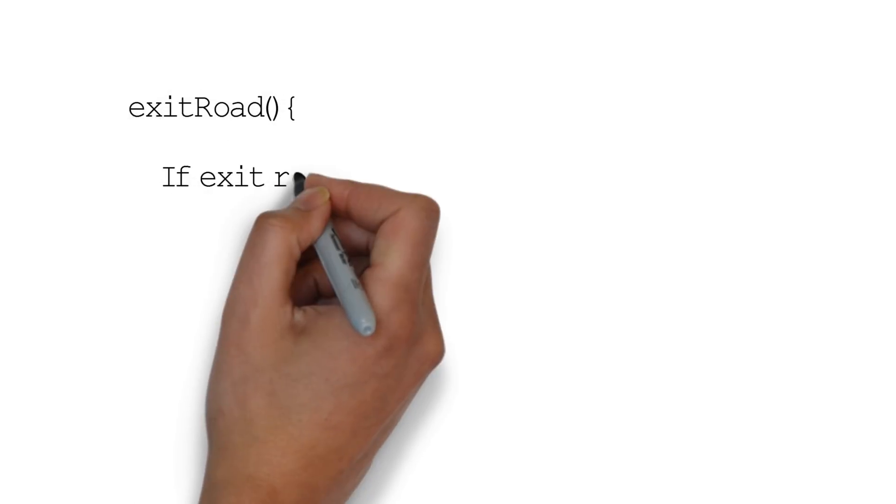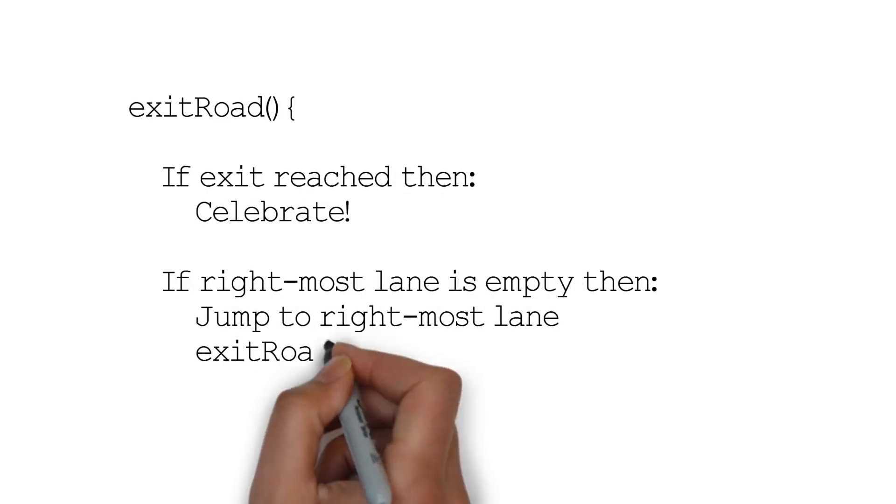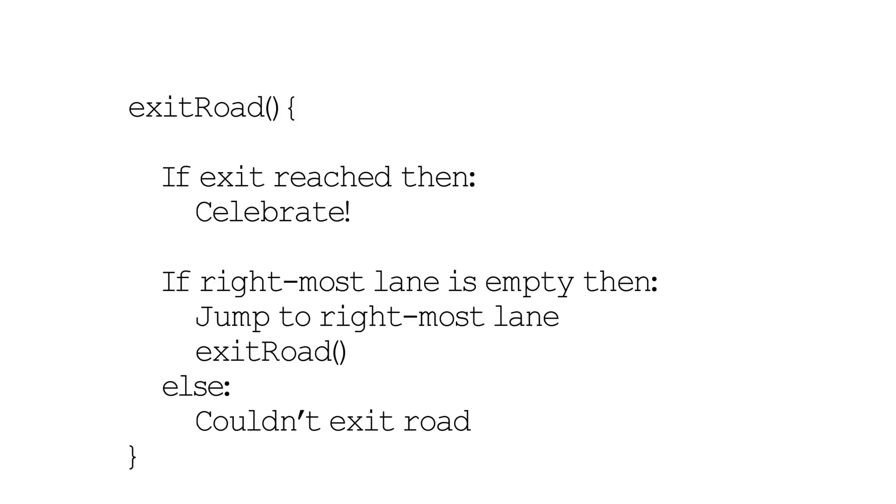If we imagine a pseudocode implementation of our car lane problem, it would look similar to this. First things first, we start our function by checking if we reach the exit. If yes, we celebrate.